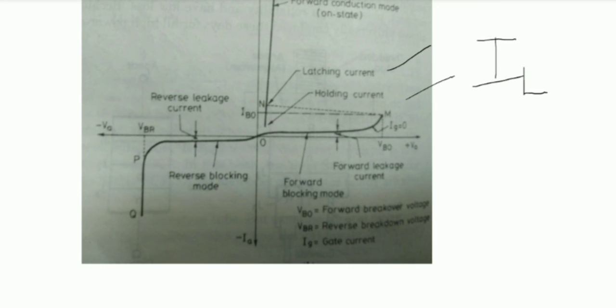Holding current is defined as the minimum value of the anode current below which the SCR will turn OFF. In general, the latching current IL is greater than the holding current IH. This concludes today's class on thyristors.